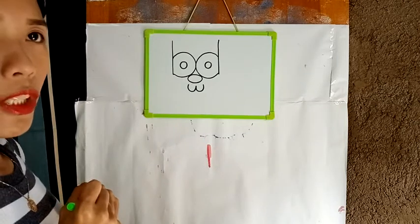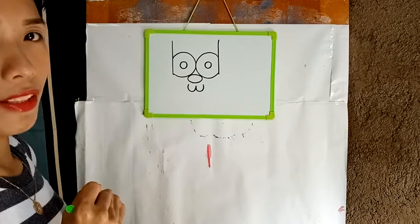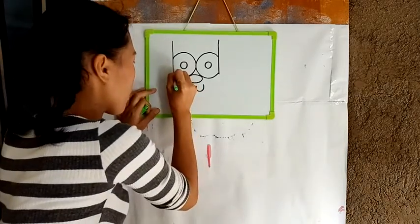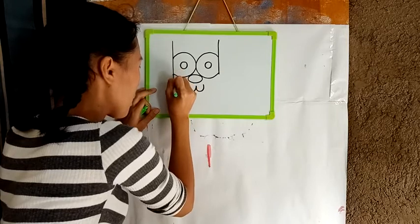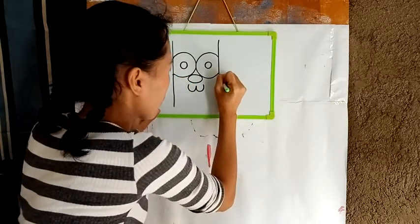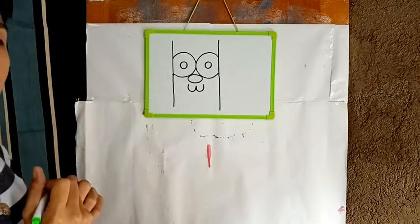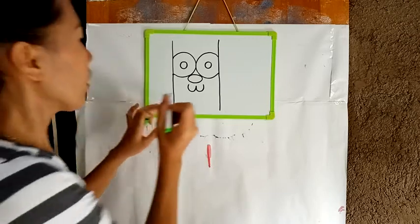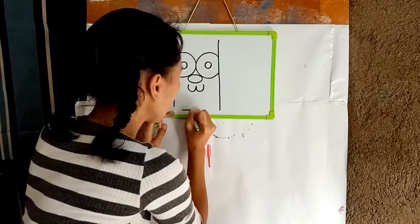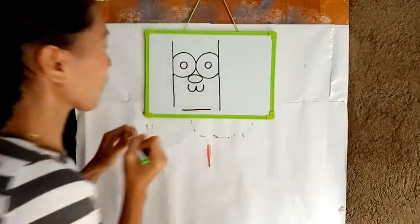We are going to draw next is a straight line — two straight lines rather. Let's draw straight lines from this side and a straight line from this side. Okay, and let's draw a straight line here. Straight line.